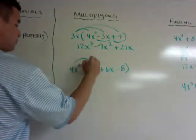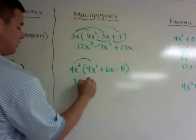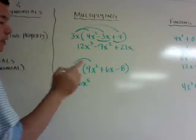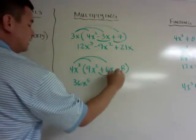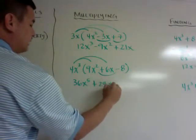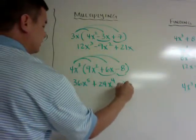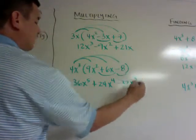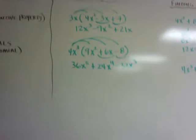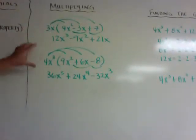Same thing here, just one more example. When I do this first one, it's going to be 36x to the fifth, so again we're using our exponent properties that we used last chapter. This next one is 4x³ times positive 6x, so plus 24x⁴, and this last rainbow is times negative 8, so it's minus 32x³. Just multiplying it in.